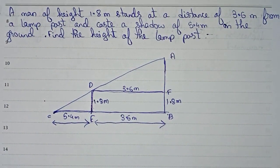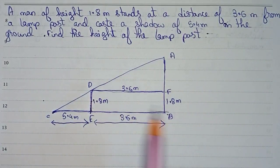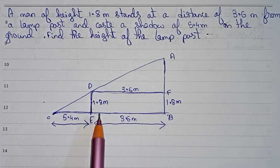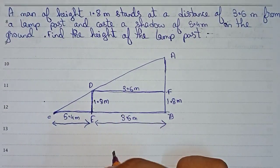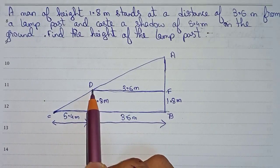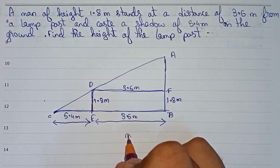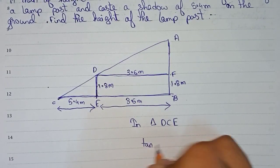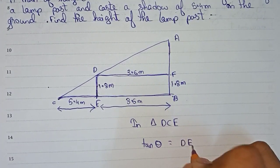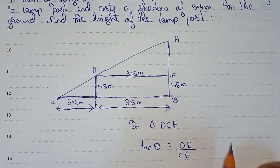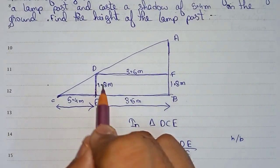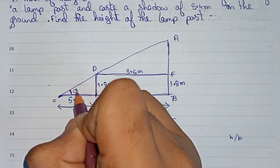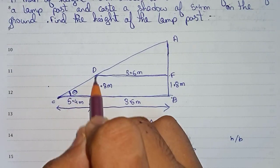So we have our diagram. We have to find the length of AB. It doesn't matter that the diagram looks rough. First, we will take the small triangle DCE. In right triangle DCE, tan θ equals DE divided by CE — that is, height divided by base. Taking this angle as θ, tan θ equals DE by CE.